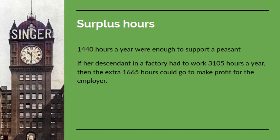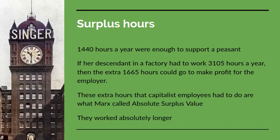Because, actually, until the late 19th century, workers in Britain were probably paid less than they had been in the 1400s. These extra hours that employees had to do are what Marx calls absolute surplus value. He calls it absolute surplus value because capitalism forced them to work absolutely longer. The image here is of the clock of the Singer sewing machine factory outside of Glasgow, which was one of the major employers of women's labour in Glasgow.